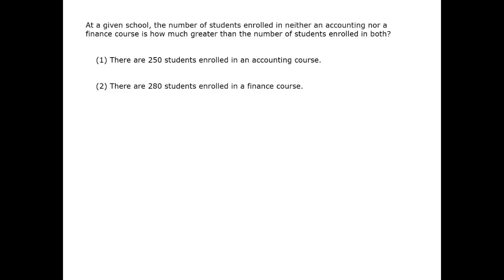For the GMAT, a particular equation is extremely useful on these questions. Here, G1 stands for the number of students enrolled in the accounting course. G2 is the number in the finance course. B stands for both and N stands for neither. We subtract both in order to get the total as we add up, because both is counted twice — it's counted in G1 and in G2. If we subtract it once, then it's counted once overall.